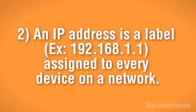An IP address is a label assigned to every device on a network. Most IP addresses are displayed in a numerical form, like 192.168.1.1. Every device connected to the World Wide Web, be it a computer, a networked printer, or a game console, has an IP address.